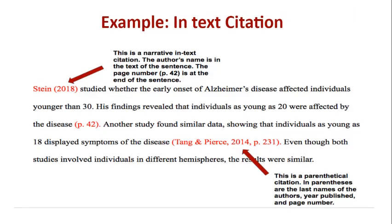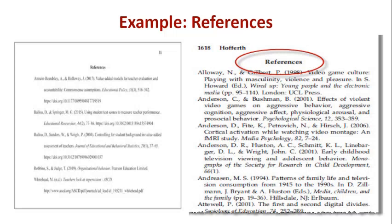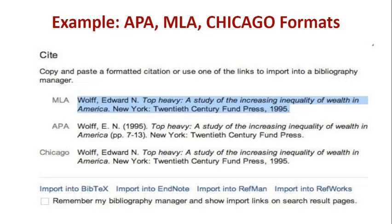Here is an example of in-text citation — look at the words in red to see how you are supposed to write in-text citations. And here is an example of references which are generally at the end of your academic writing on a separate page — this is how we list the references. The most common formats for citation are APA and MLA.